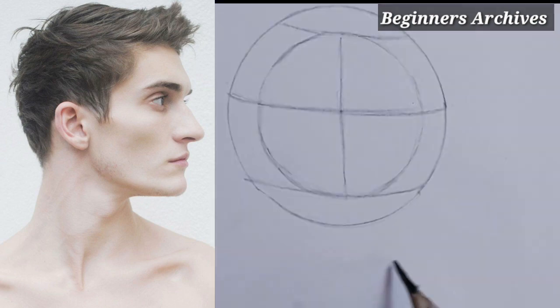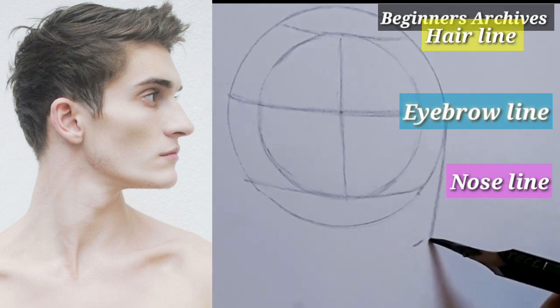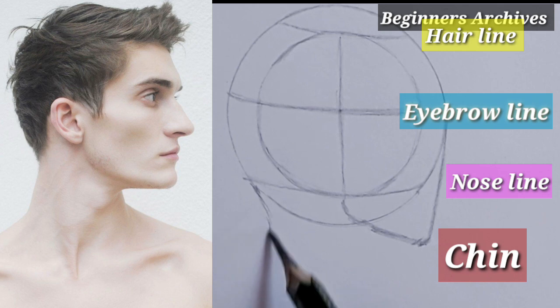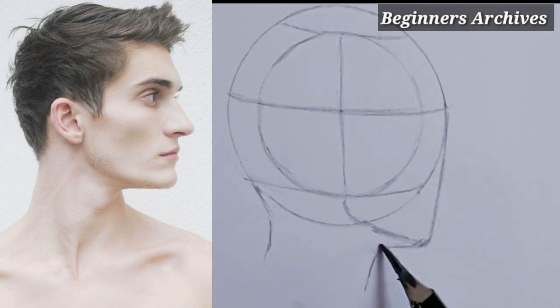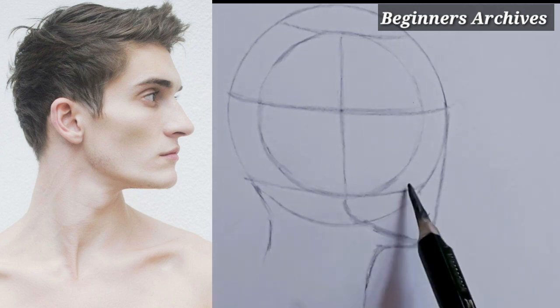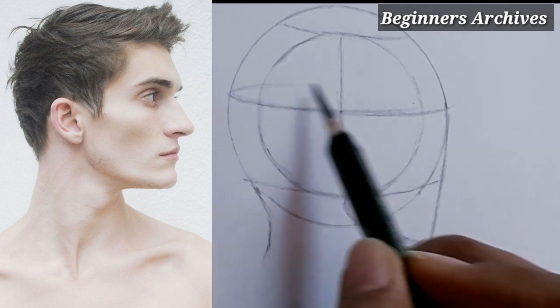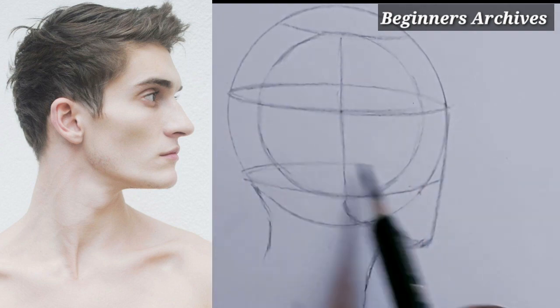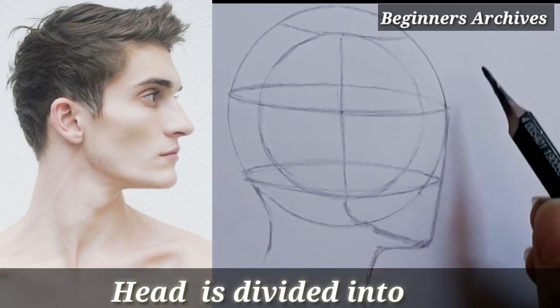We will draw the top portion of the hairline, the middle part where we will draw the eyebrows, and the bottom part where we will draw the nose. Then we will mark the chin at equal distance and attach lines to complete the face. This forms a sphere.